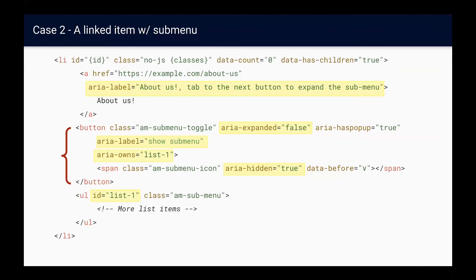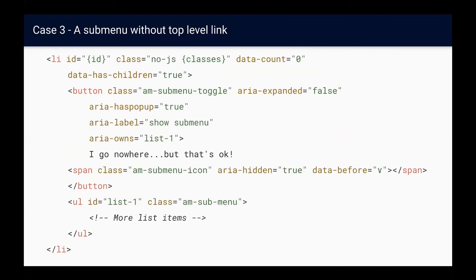The button provides a semantically appropriate element we can interact with whether JavaScript is available or not. We've also added aria-expanded to indicate to a screen reader if the submenu is open or not — its state can be changed with JavaScript later. Since we don't want any text to show on the button, we give it an aria-label to provide context if the button is focused. Inside the button we make space for an icon, using aria-hidden to hide only the icon from screen readers while leaving it visually available. The aria-owns property associates the button with the submenu, similar to how a label is associated with a form element.